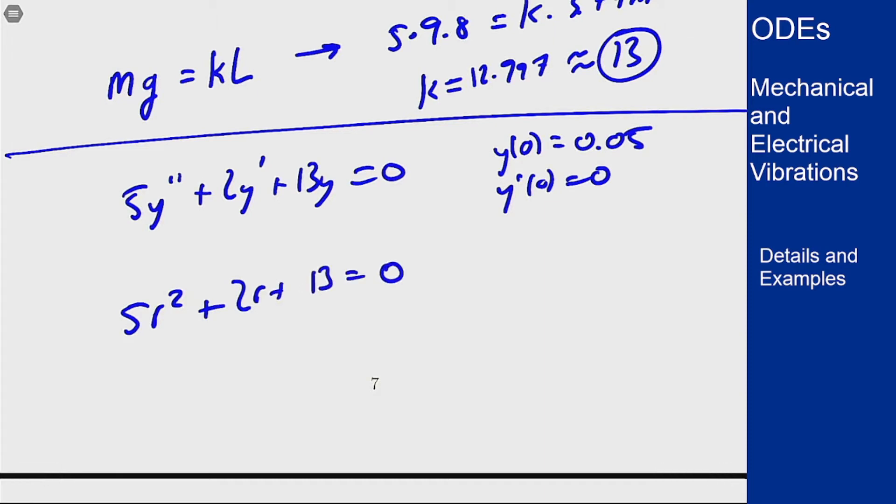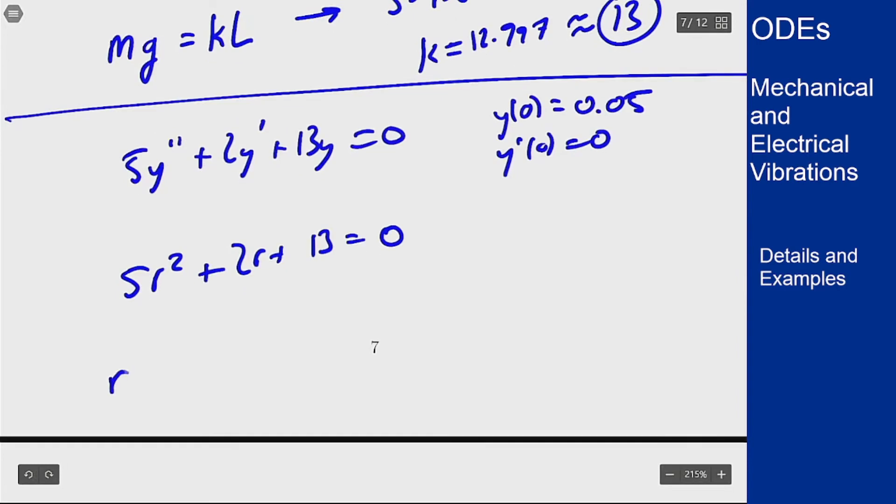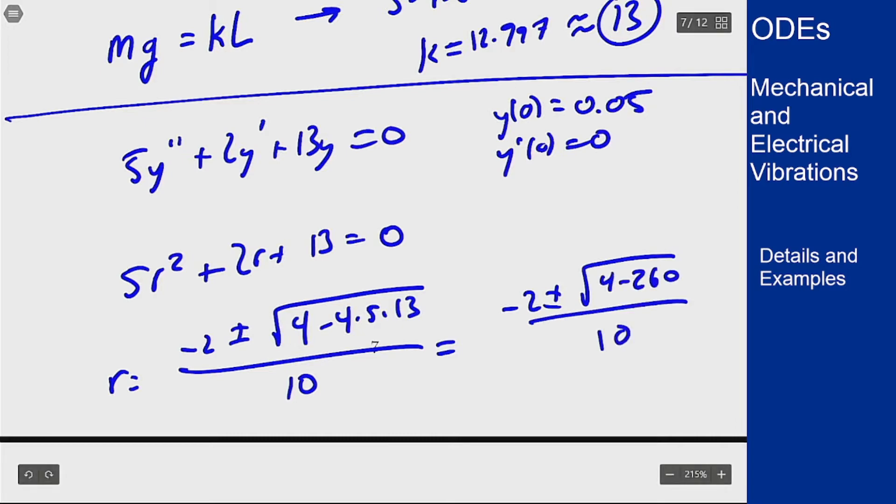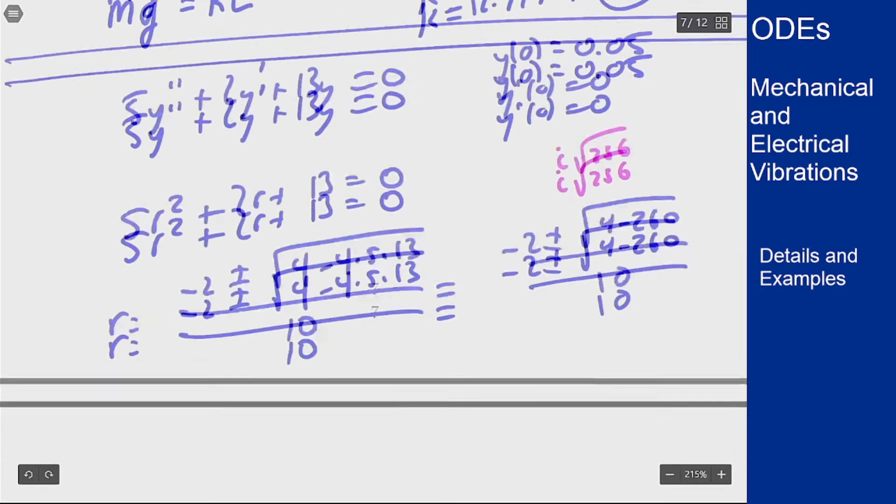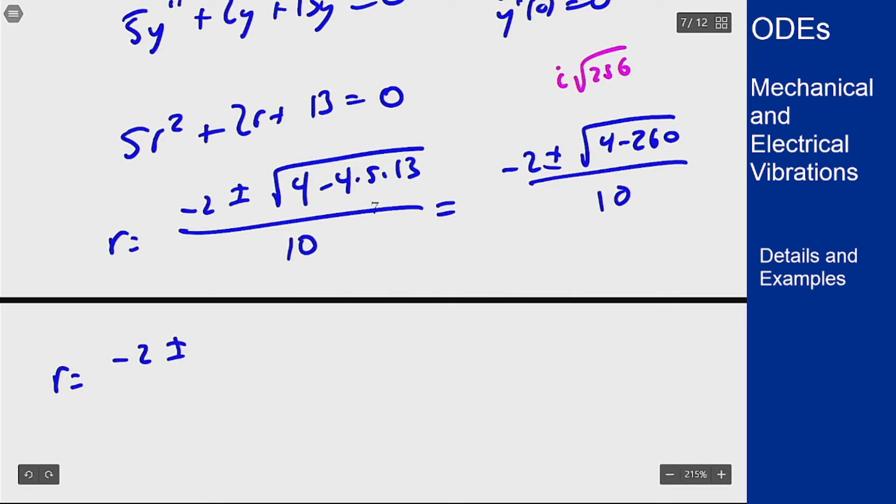This doesn't seem to factor so let's look at the quadratic formula for the roots. We'll get r is negative 2 plus or minus the square root of b squared which is 4 minus 4ac over 10. I'm going to get negative 2 plus or minus square root of 4 minus 260 over 10. This will be root 256 with a negative sign in front so an i out front and that's 16. My roots are negative 2 plus or minus 16i over 10 or negative 1 fifth plus or minus 8 fifths i.